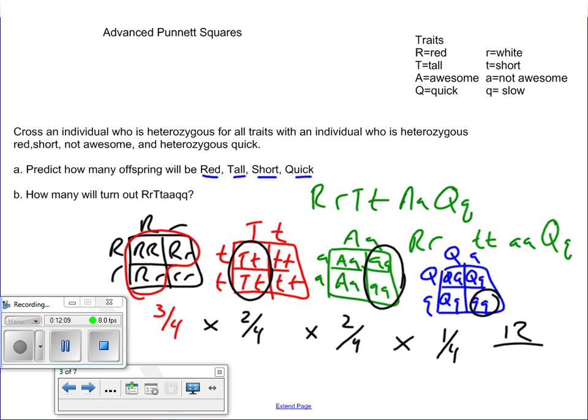And then how many will turn out for the second part, big R little R, big T little T, little A little A, little Q little Q. Same thing. So we're just going to do big R big R, that's two out of four. Big T little T, two out of four for that one. Little A little A, two out of four. And little Q little Q, one out of four. It's a slightly different answer because we're not taking into account that big R big R for that first one. All you do is multiply that out. That's as complex as the Punnett squares will become.